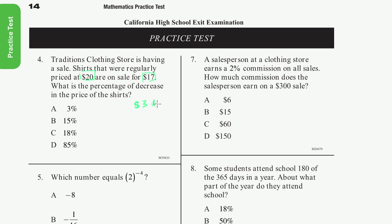We have a $3 decrease in the price of the shirts. So what is the percentage decrease? We're starting at $20 and we're decreasing by 3, so the percentage decrease is 3 over 20. This is the percent decrease, or the fraction decrease right there, and this is going to be equal to what?